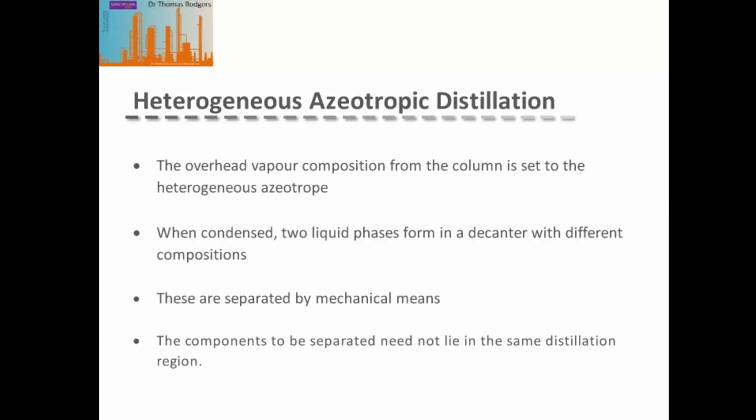The overhead vapor from one of the columns is set so that it's very close to the composition of our heterogeneous azeotrope. So when we condense this overhead vapor, our two liquid phases form and then we can separate them in a decanter by something simple like gravity separation.